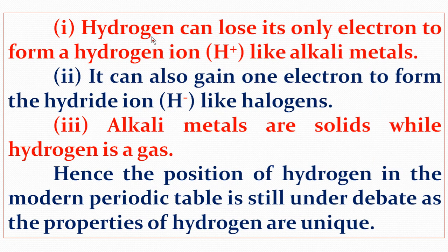Hydrogen can lose its only electron to form a hydrogen ion H+ like alkali metals, so it acts as an alkali metal. It can also gain one electron to form the hydride ion H− like halogens. However, alkali metals are solids, while hydrogen is a gas. Hence, the position of hydrogen in the modern periodic table is still under debate, as the properties of hydrogen are unique. So hydrogen is placed in Group 1 with the alkali metals.